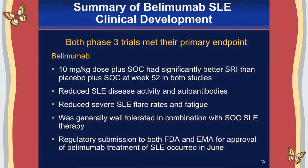In summary, these were the first phase three trials in lupus to meet their primary endpoint, with the 10 mg/kg dose meeting the SLE Responder Index primary endpoint in both trials — the dose proposed to regulatory agencies for approval. Belimumab showed reduction in disease activity and autoantibodies, reduced severe flares and fatigue, and was generally well tolerated with global standard of care. Regulatory packages were submitted to both the FDA and European regulatory authorities in early June for approval for the treatment of lupus.